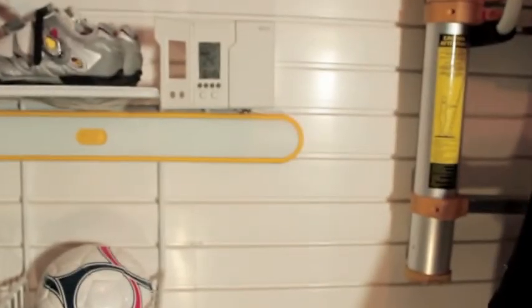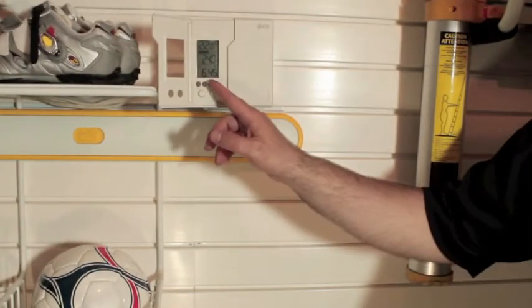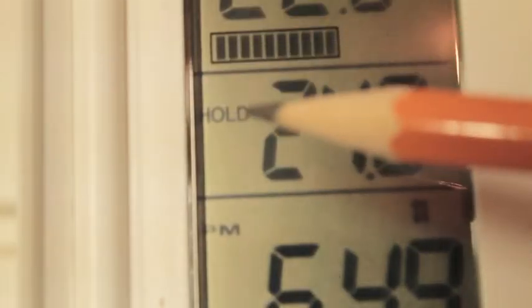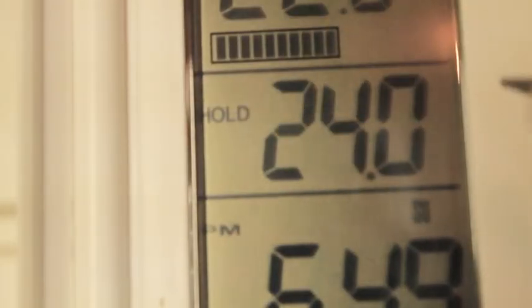If you don't want the thermostat to adjust the temperature automatically, you can press the HOLD button to put it into a manual mode. The word HOLD now appears on screen instead of the word OVERRIDE or the program period.